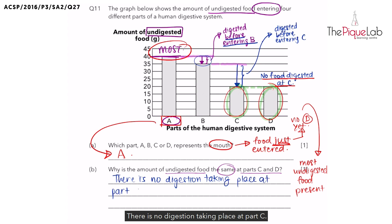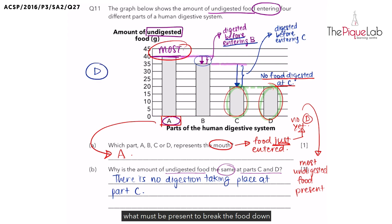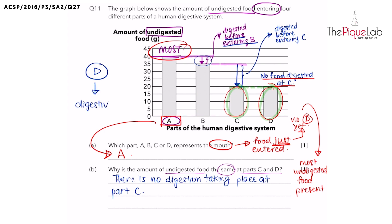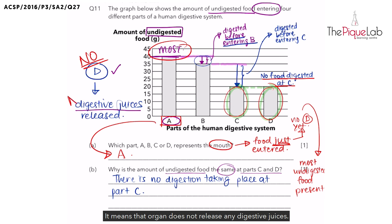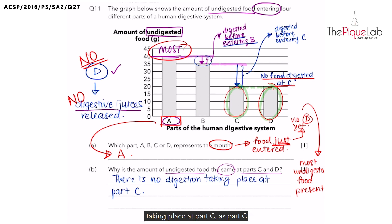Now let's think a bit deeper. What could be a possible reason why part C does not allow digestion to take place? Remember, in order for digestion to take place, what must be present to break the food down into simpler substances? Yes, there must be digestive juices released by the organ. So if there are no digestive juices released, digestion cannot take place. That organ does not release any digestive juices, and that is our reason for why there is no digestion taking place at part C — as part C does not release any digestive juices.